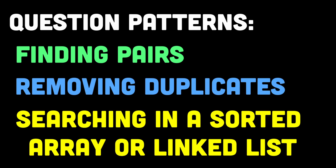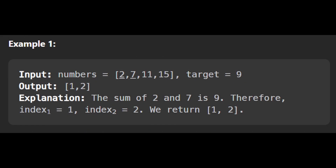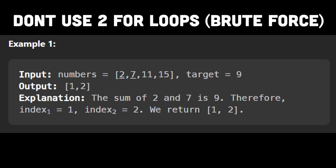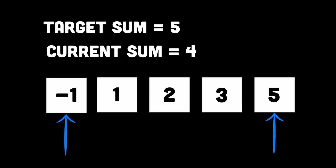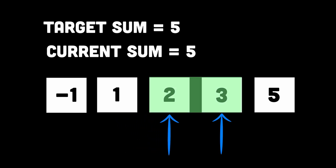One good example is the two-sum problem, where given an array of integers and a target value, you need to find two numbers in the array that add up to the target. Instead of writing two for loops and iterating through the entire array for each element, you can use the two-pointer approach by initializing two pointers — one at the beginning and one at the end of the array. By comparing the sum of the elements pointed to by the two pointers with the target, you can adjust the pointers accordingly until you find the desired pair.